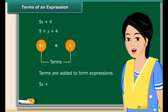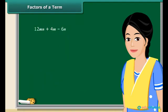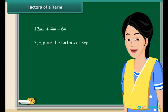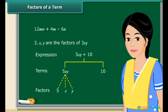How many terms are there in 5x + 3y? That's right — it has two terms. A term is a product of its factors. For example, 3x and y are the factors of the term 3xy. We can also represent 5xy + 10 by a tree diagram, where dotted lines are used for factors and continuous lines for terms. Remember, the factors cannot be further factorized.